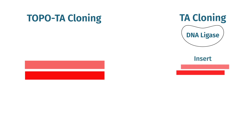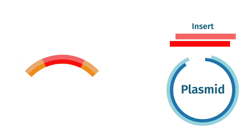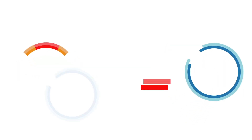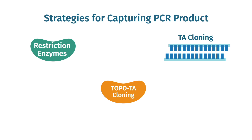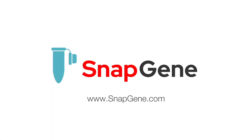On paper, the workflow for TA and topo TA cloning are not that different from restriction enzyme-based cloning, but the time involved is drastically shortened, because there is no need for restriction enzyme digestion and subsequent cleanup steps. As a general rule, TA and topo TA cloning are conceptually interchangeable. However, topo TA cloning is generally faster than TA cloning and prone to less vector-only background. Both techniques are significantly quicker than restriction enzyme cloning. Whereas restriction enzyme cloning of PCR products is entirely flexible, both TA and topo TA cloning are restricted to commercially prepared vectors. To learn more about molecular cloning, visit snapgene.com.